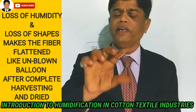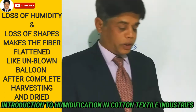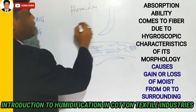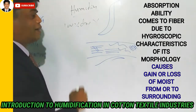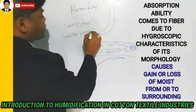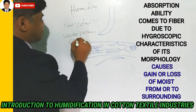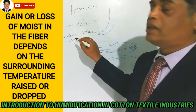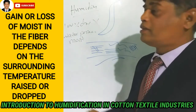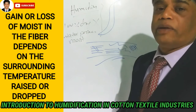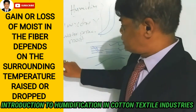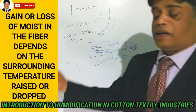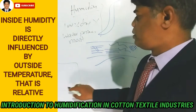65% relative humidity is required. Humidity means the air is not 100% dry — it contains water particles, it is moist. That moisture is measured in terms of percentage: 65% relative humidity. Whatever shed is there — loom shed, spinning shed, blow room shed, carding shed, drawing shed — it is all fully controlled for humidification.